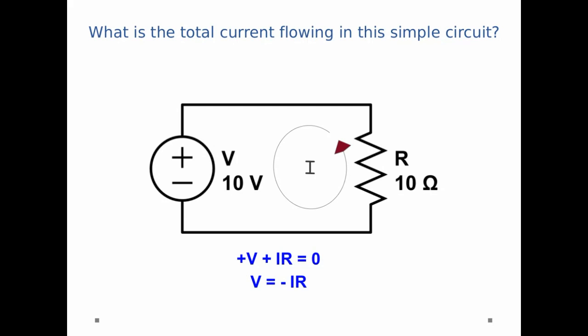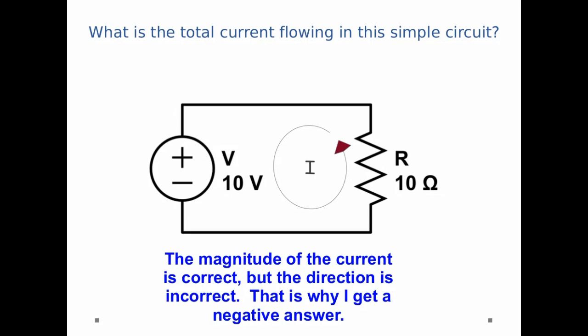And so I get V equals minus IR, and I get I equals minus V over R, which is minus 1 amp. The magnitude of the current is correct, but the direction is incorrect, and that's why I get a negative answer.